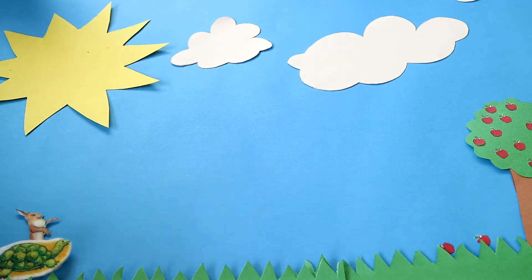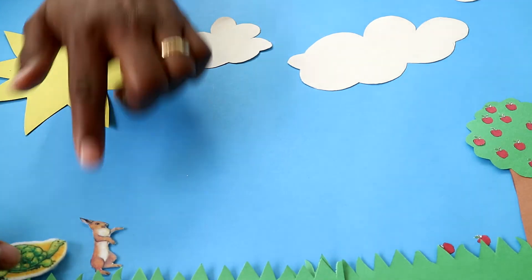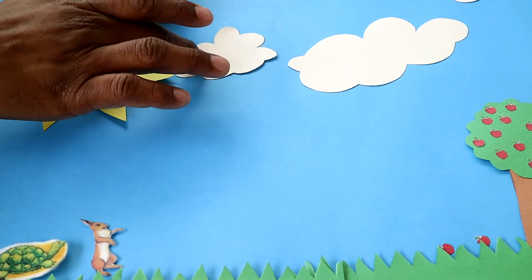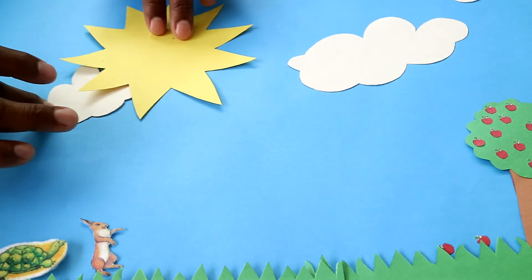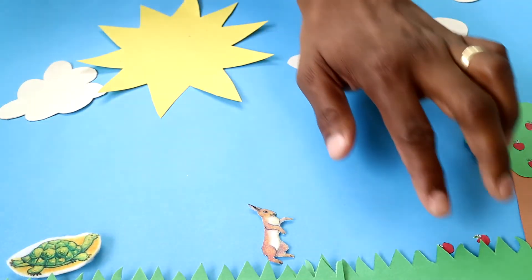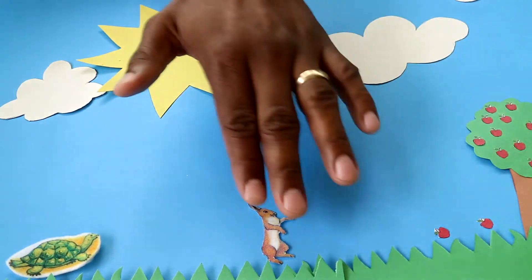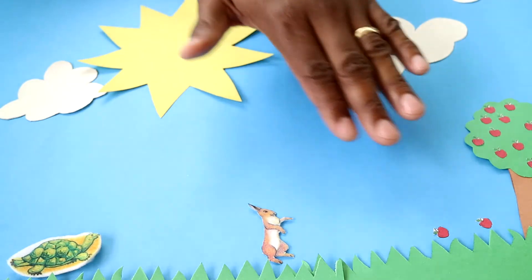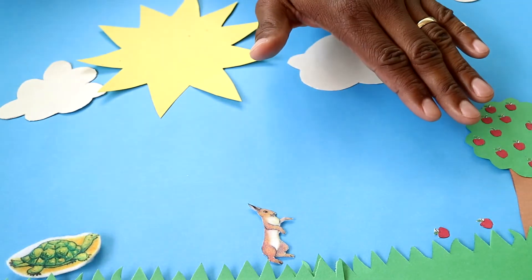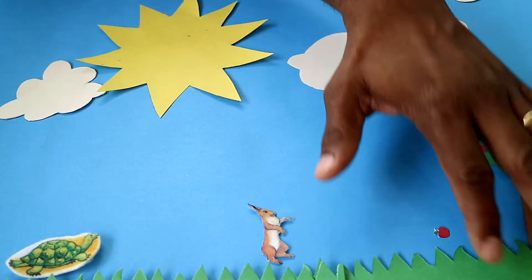We will take photographs of every shot as the rabbit takes the lead, the sun moves across the sky, and the cloud falls behind as our rabbit takes the lead. We have the apples to give us markers as the rabbit and the tortoise makes progress. This is blue because we want it to represent the morning. They're on their green grass.